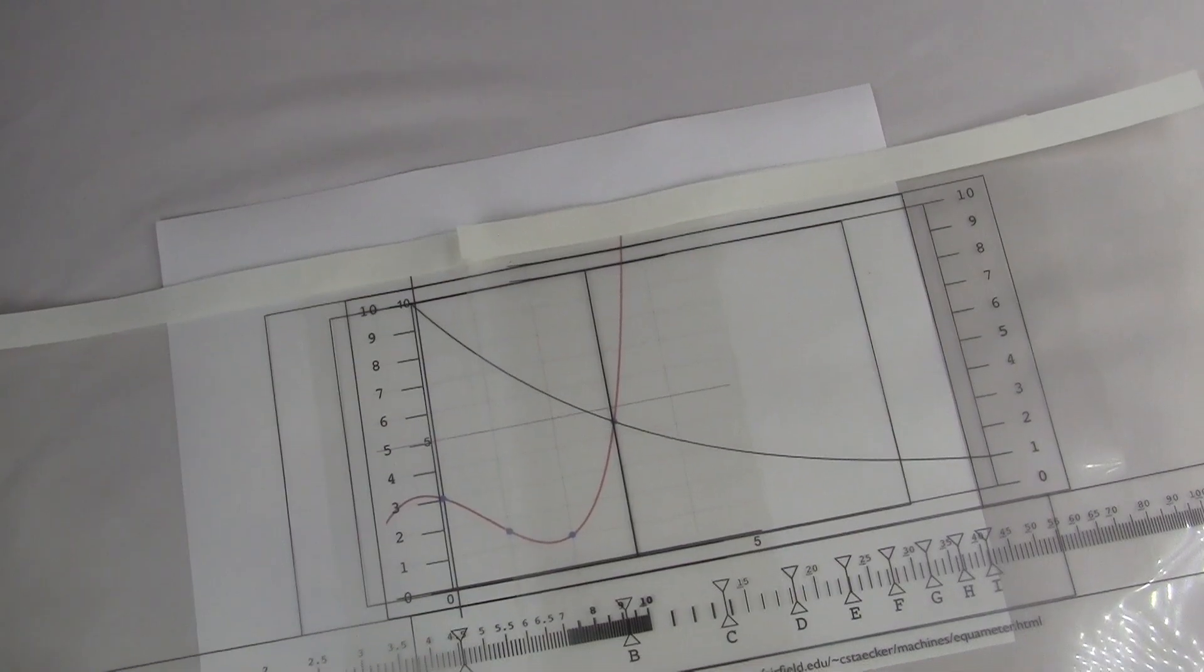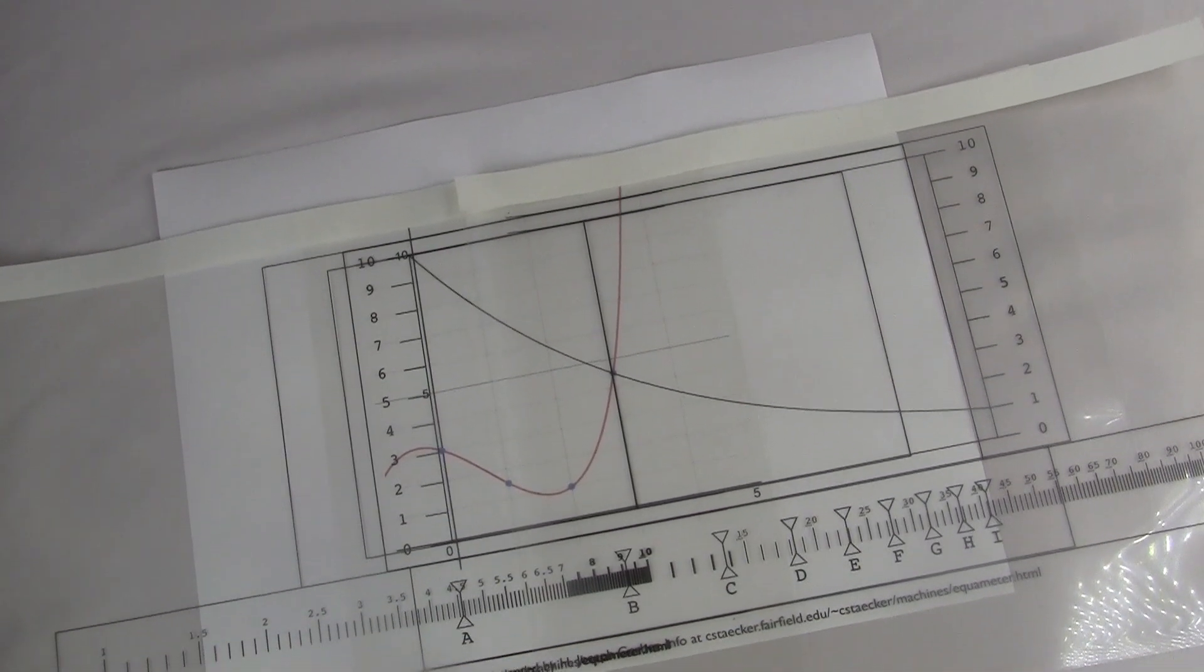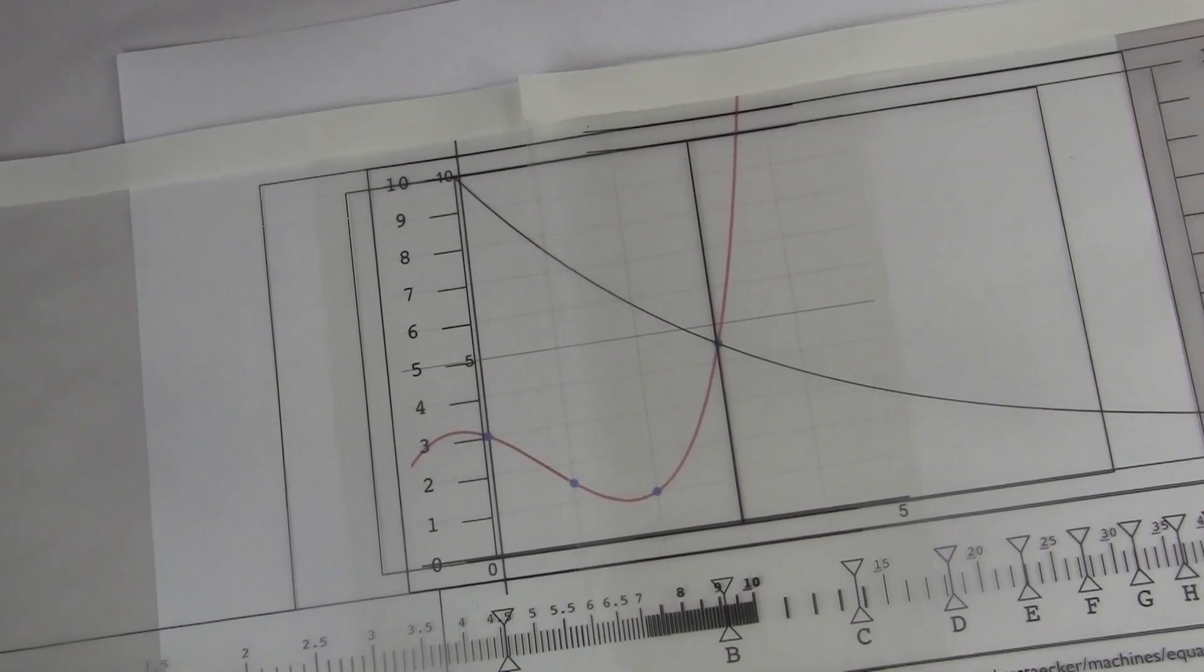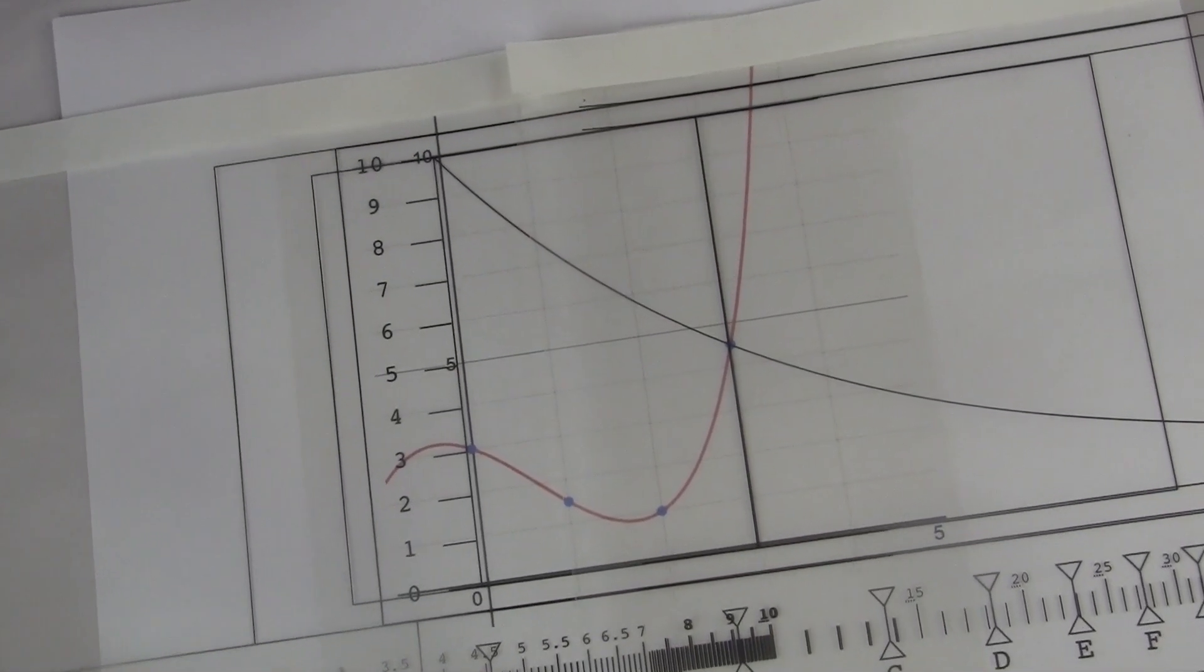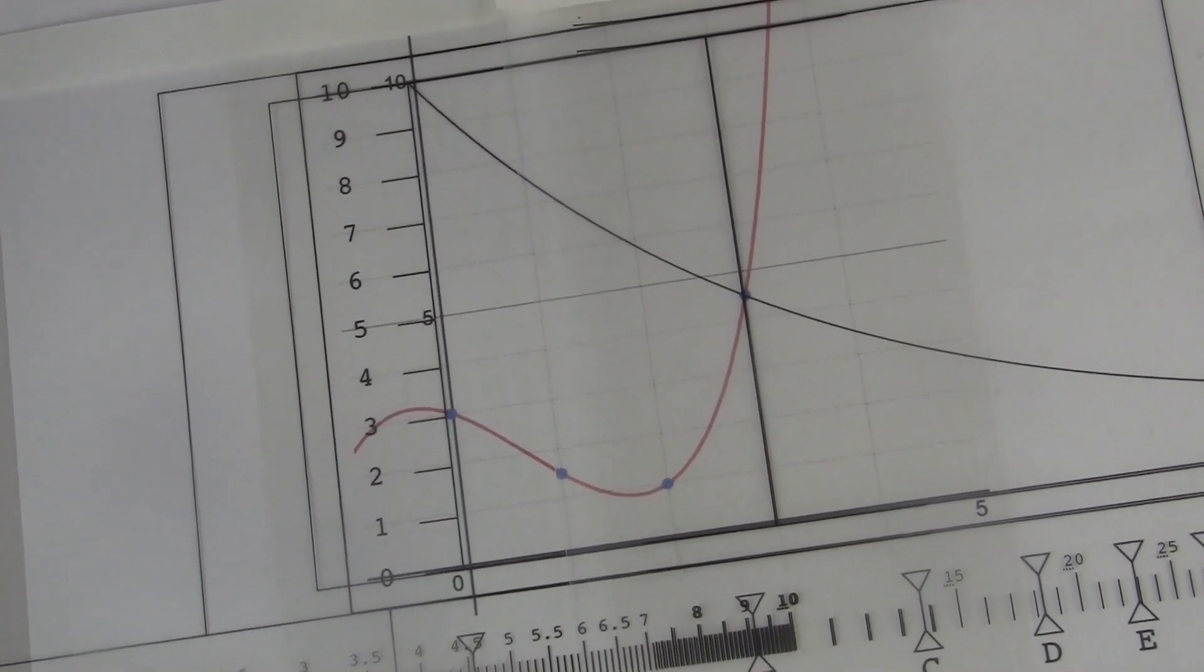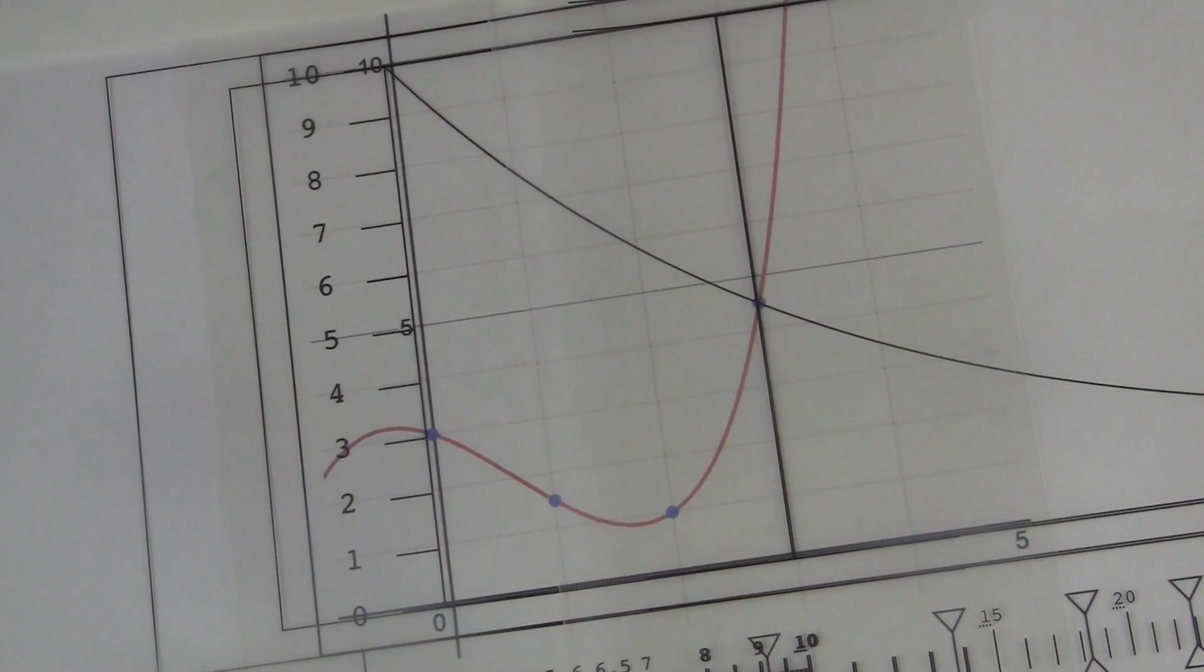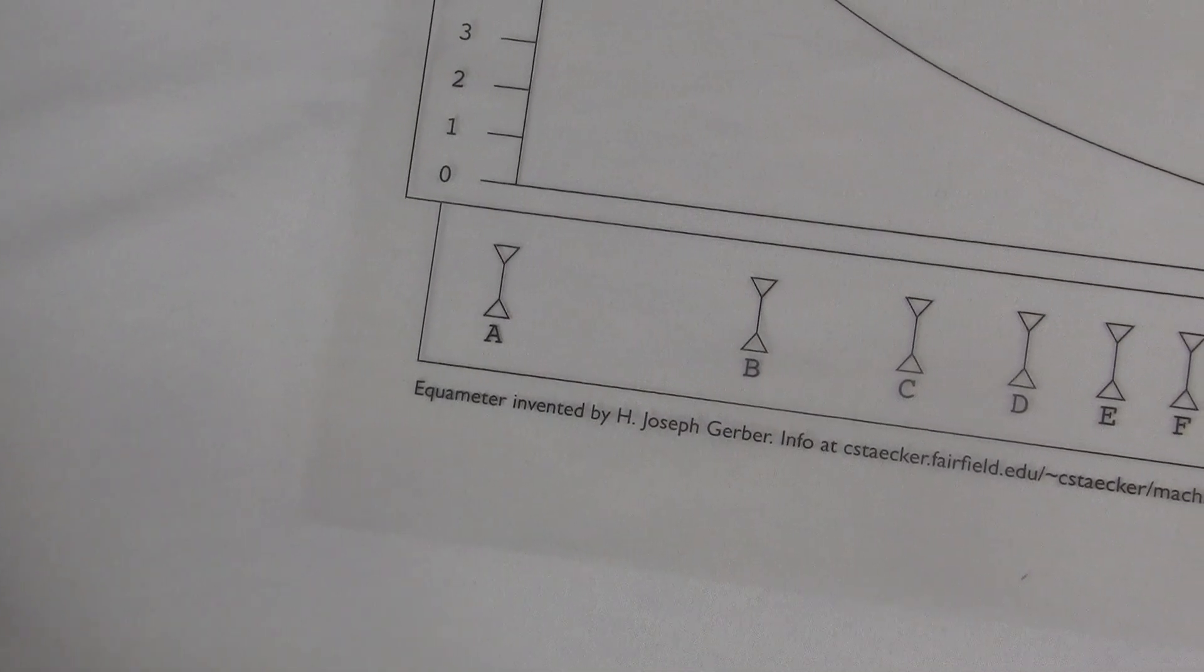The Equimeter takes a bunch of measurements and actually tells you the equation of the curve. In principle, then, you could use this to answer any possible mathematical question about the data. When you have data on a page, it usually only represents a portion of what you're really looking at. Knowing an equation would allow you to predict the data values beyond where you measured. This is more or less the whole reason that we use equations or mathematics at all in the sciences.